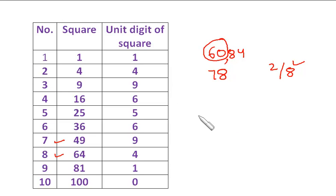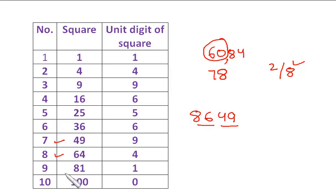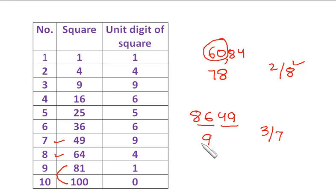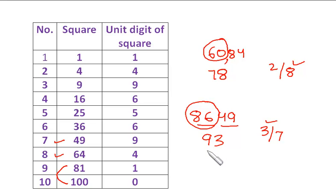Take 8649. Make the pairs: 49 and 86. Since 86 lies between the squares of 9 (=81) and 10 (=100), the tens digit is 9. For the unit digit, the choices are 3 or 7. Multiply 9 by its next number: 9×10=90. Since 86 is less than 90, choose the smaller number: 3. So the square root of 8649 is 93.